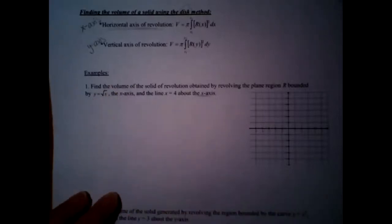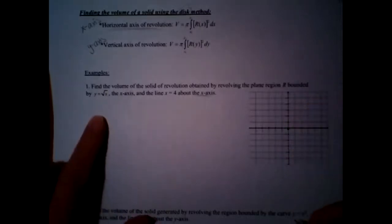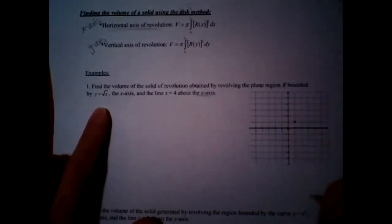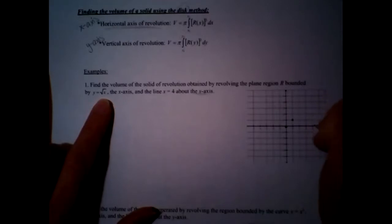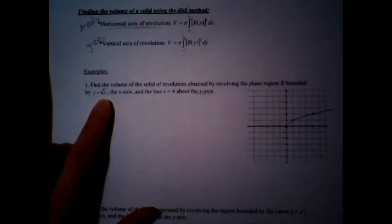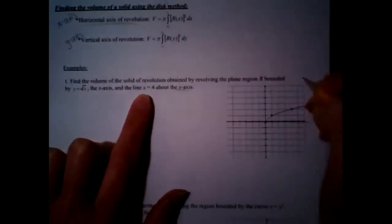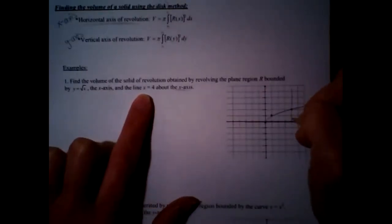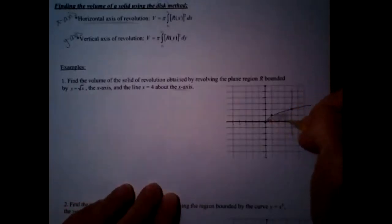So first, y = √x. We'll have (0, 0), and if we plug in 1 we get 1. I would not plug in 2 or 3 — you can't square root those nicely. Jump to 4: plug in 4 and you get 2. So this is your square root curve. The x-axis, and the line x = 4 — that's a vertical line at 4. This is the area enclosed by that.